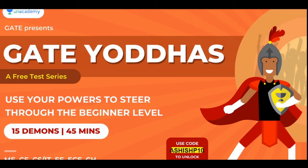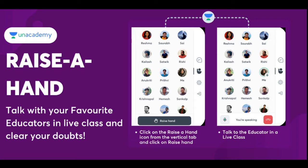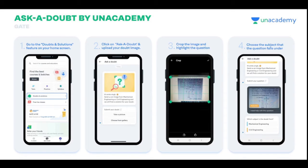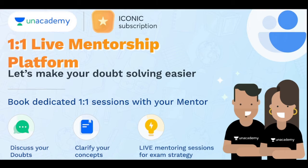For beginners, start with the 15-question test. Unacademy is a platform where you can directly contact your educator — you can raise your hand, send your voice, or ask your doubts by clicking a picture, and your educator will help you. If you have a weak base for a particular subject, you can go for the iconic subscription.